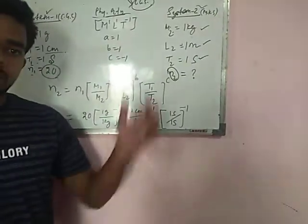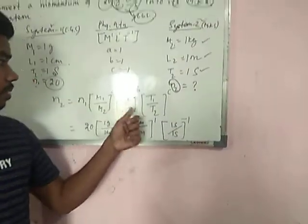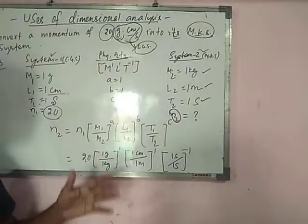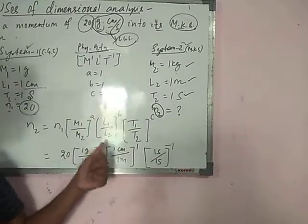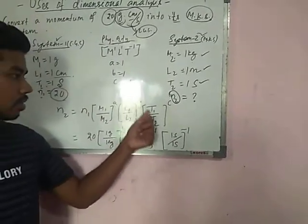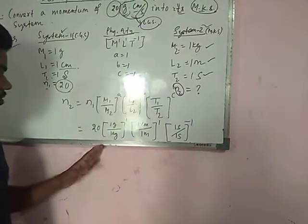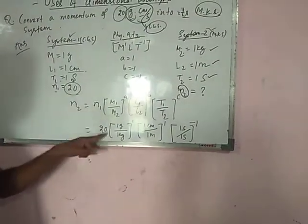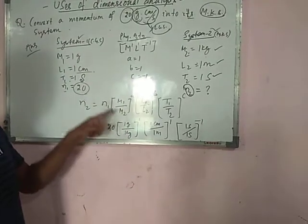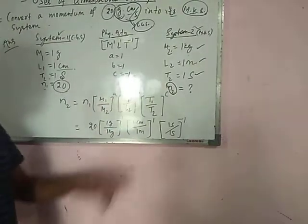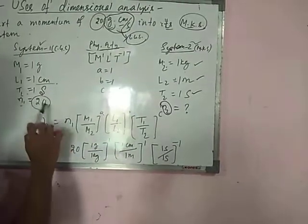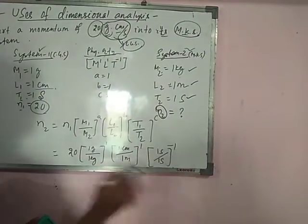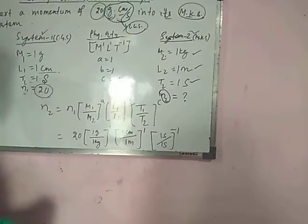Using the formula we derived previously: N₂ = N₁(M₁/M₂)ᴬ(L₁/L₂)ᴮ(T₁/T₂)ᶜ. Placing the values: N₁ is 20, M₁ is 1 gram, M₂ is 1 kg, L₁ is 1 centimeter, L₂ is 1 meter, T₁ is 1 second, T₂ is 1 second.